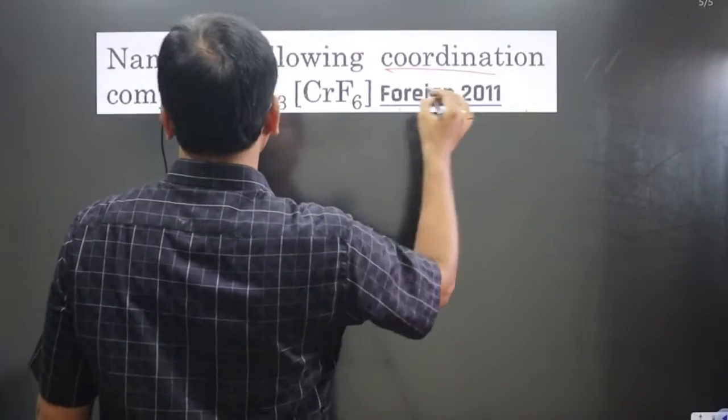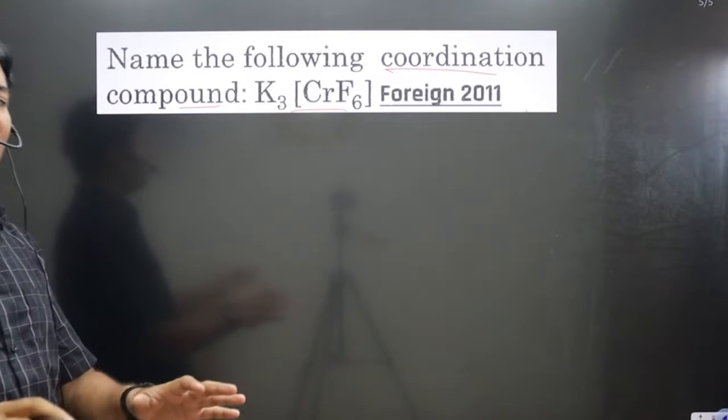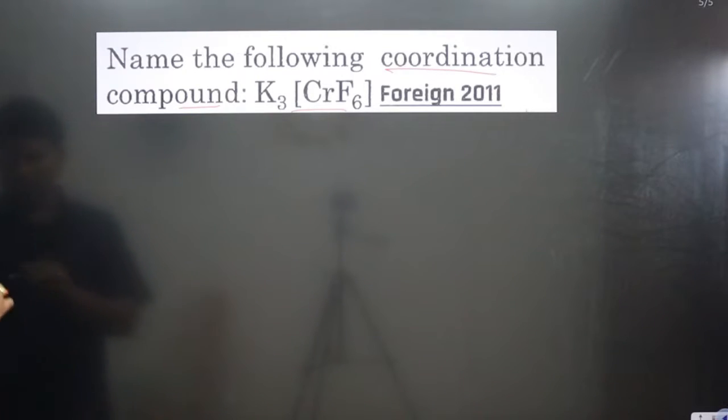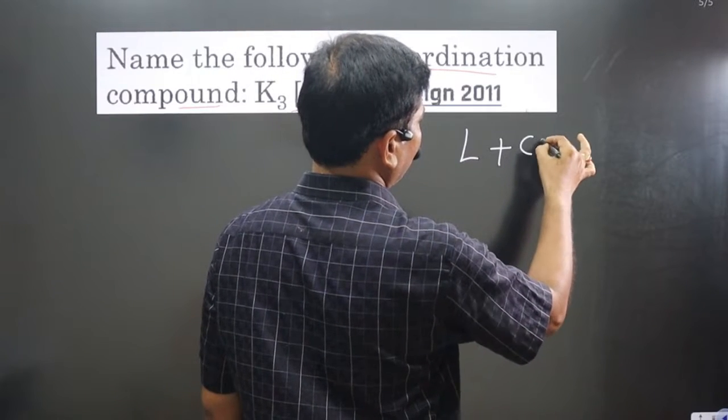The question says name the following coordination compound. The complex given here is K₃[CrF₆]. To name the complex, we follow this order: first name the ligands, then the central metal atom, then write the oxidation number of the central metal atom in roman numerals.